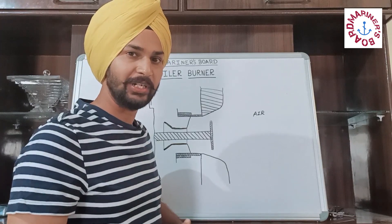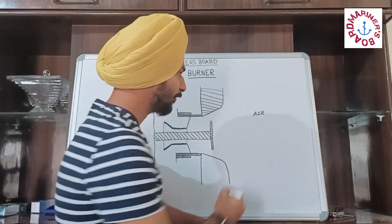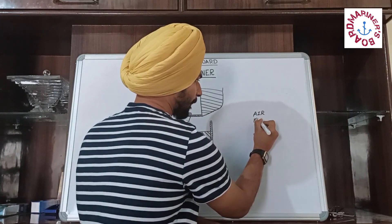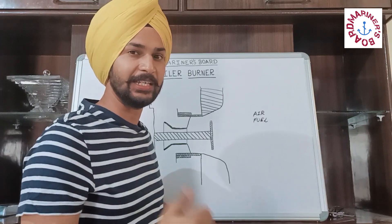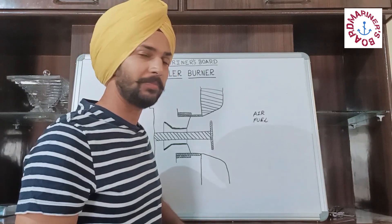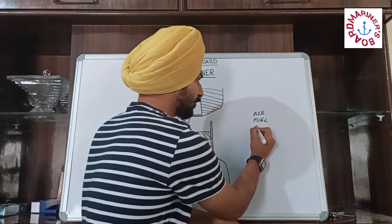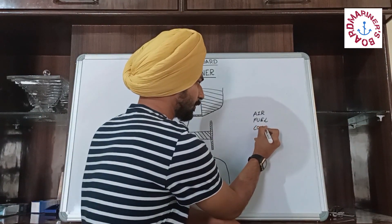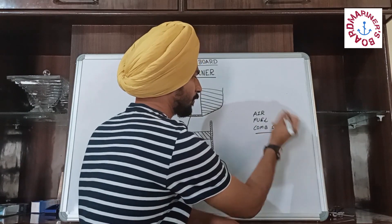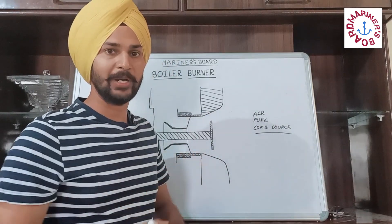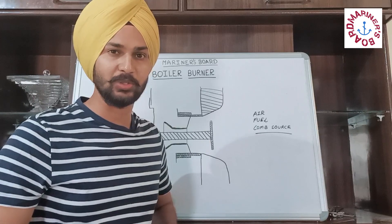The second element that we need is the combustion element, that is the fuel itself. And the third element that we need is an ignition source, which could be from the heat of the furnace or from the pilot burner. These are the three elements needed inside the boiler for combustion to occur.